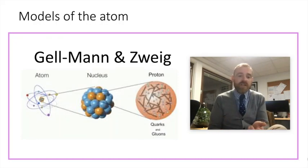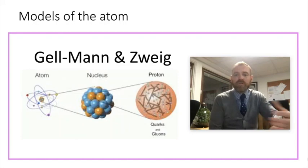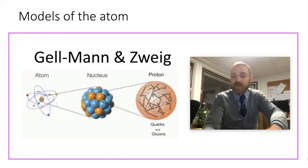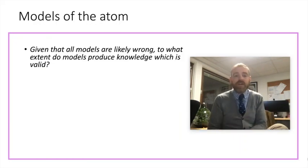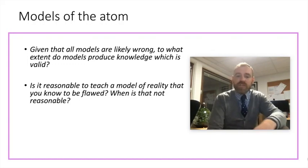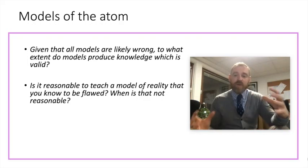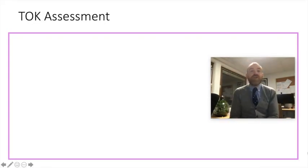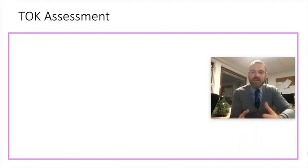And this brings up loads of interesting questions. If all models are ultimately likely to be wrong, why do we use models? Or can we understand anything without having models? A couple of classic TOK knowledge questions we can extract from this. Given that all models are likely wrong, to what extent do models produce knowledge which is valid? Is it reasonable to teach a model of reality that you know to be flawed? And if so, when? Now we all teach models of reality that we know to be flawed. This is a brilliant conversation to have with students. And again, it's a bigger question we can extract from our physics. Right, so we've seen three quick examples there of how classic conversations in physics can lead to big questions about knowledge, really classic TOK questions. There's loads more and you'll find loads more just by thinking about some of the conversations you have in physics with your students.